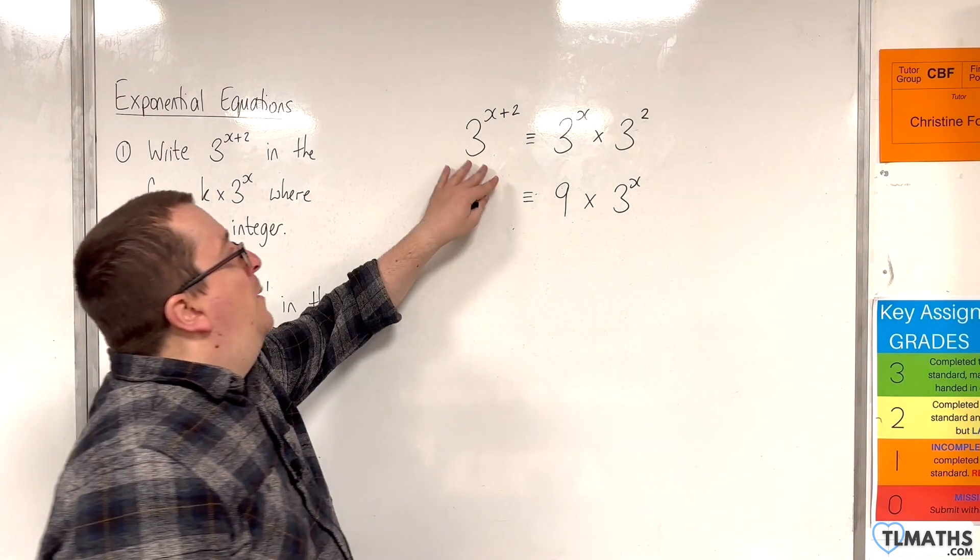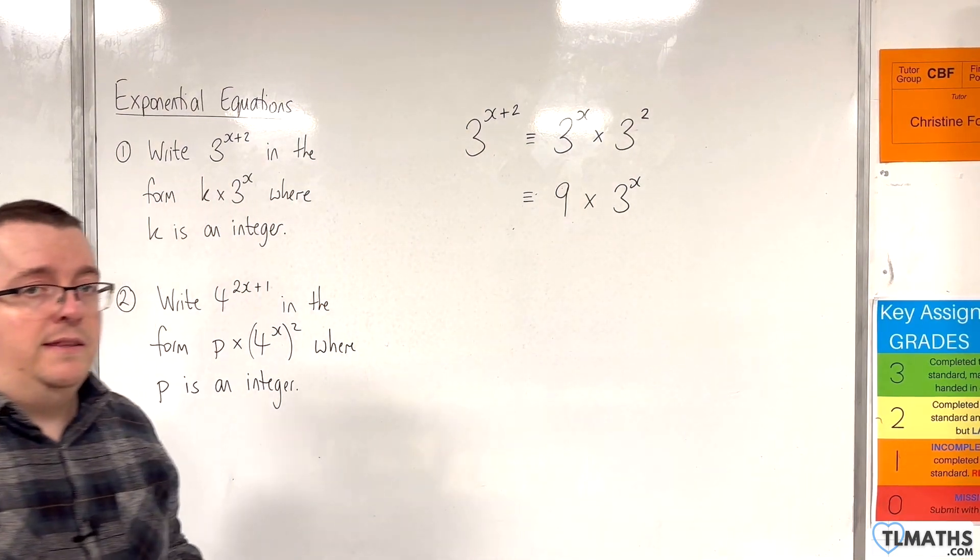Okay, so if we spot something like that, we can write it as 9 times 3 to the x.